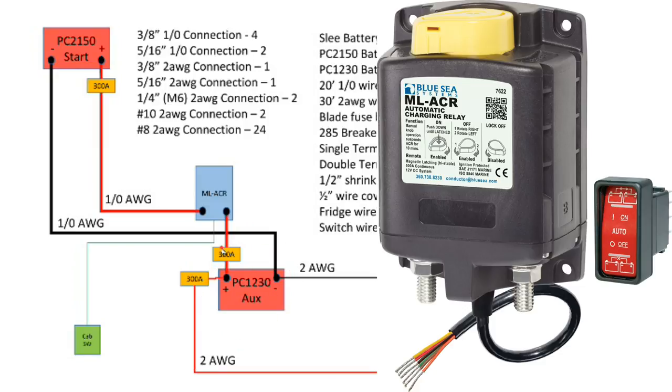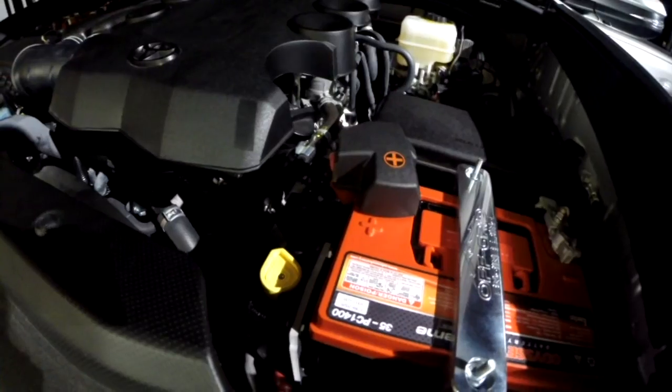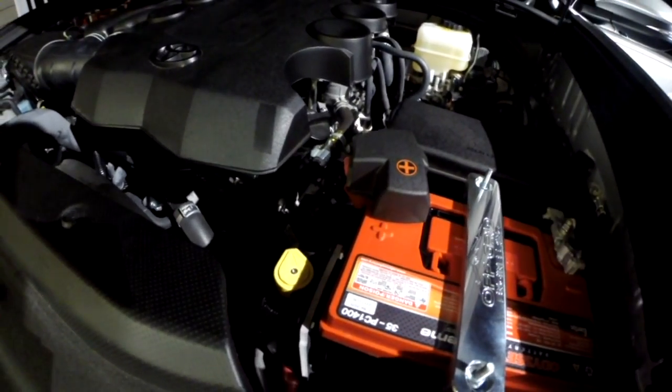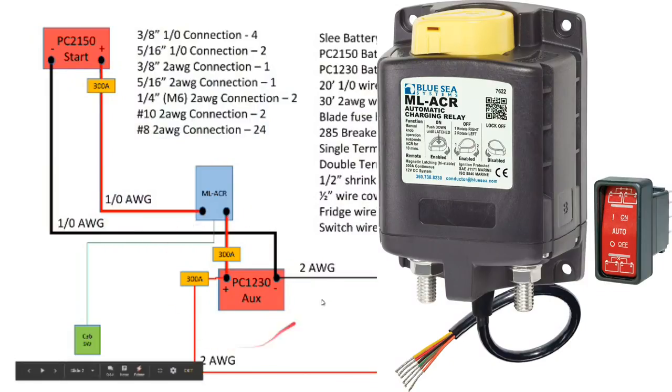Now when you shut your vehicle off, over time if you're running accessories, then the battery voltages are going to drop without that alternator running. Once the battery voltage starts to drop a little bit, the MLACR recognizes that and disconnects the batteries. That allows you to continue to run all of your accessories off the auxiliary battery, running that down as far as you need to for where you're at.